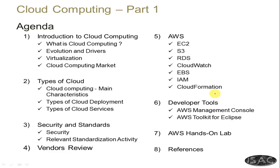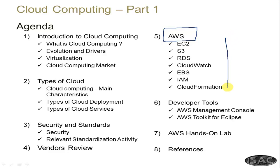AWS - Amazon Web Services - is a very important one which we will discuss in detail. In Amazon Web Services there are various kinds of services offered for users to take advantage of cloud computing. The important ones are EC2, S3, RDS, CloudWatch, EBS, IAM, and CloudFormation - these are amazing AWS offerings for cloud computing.